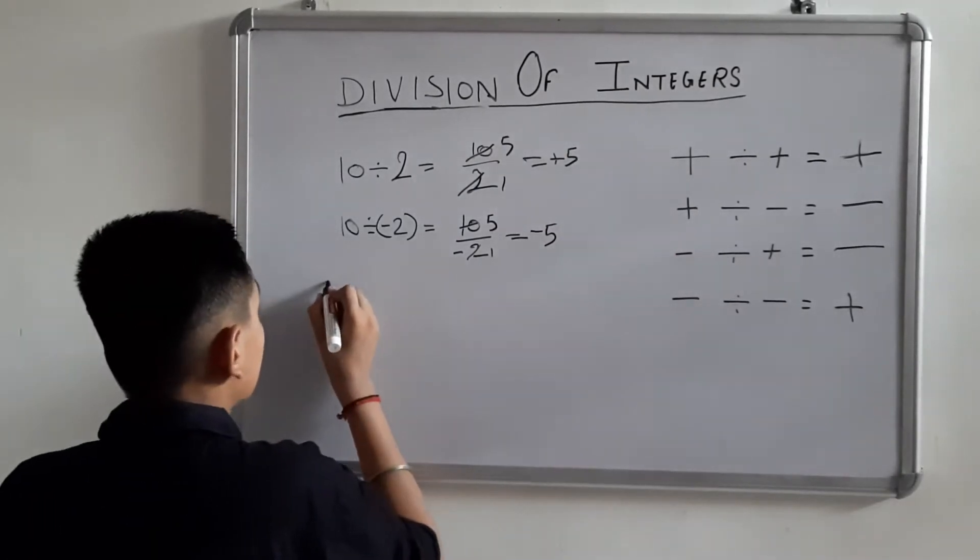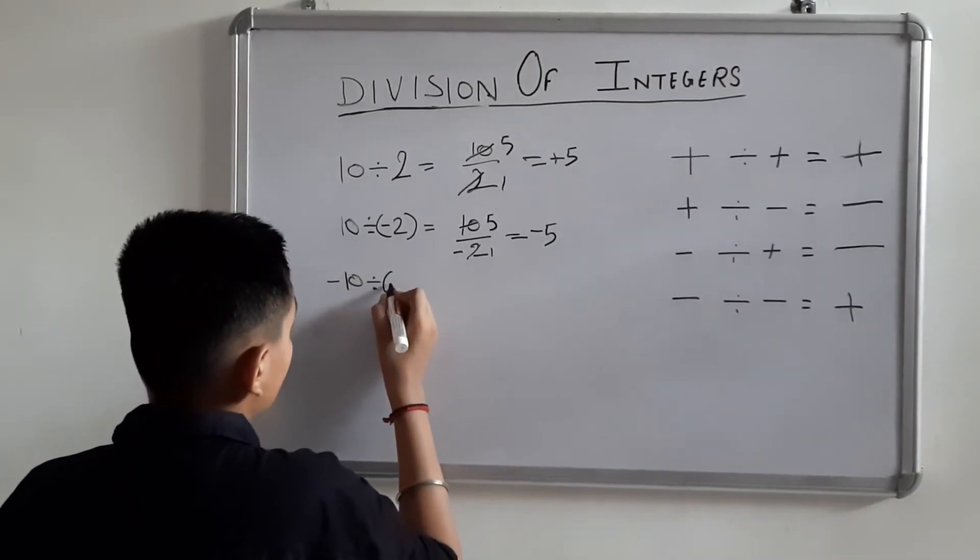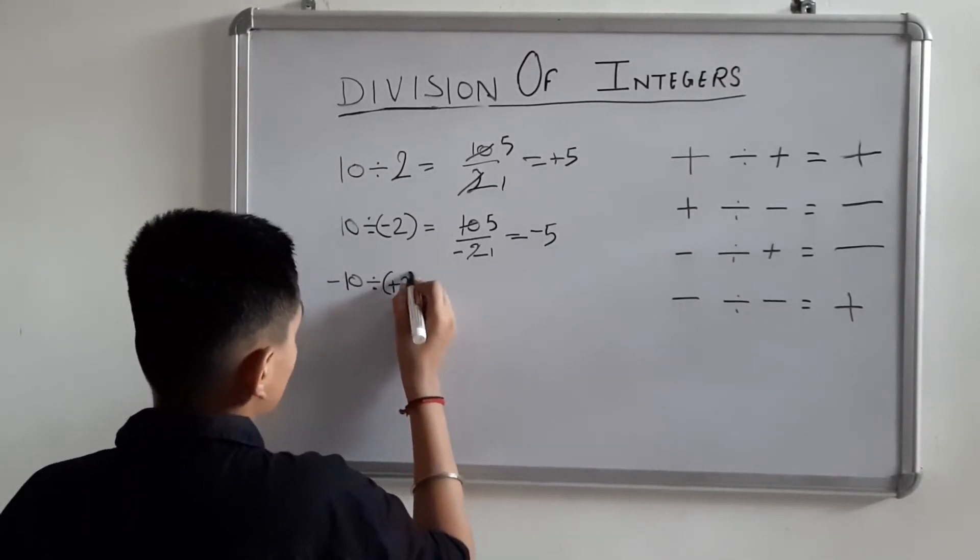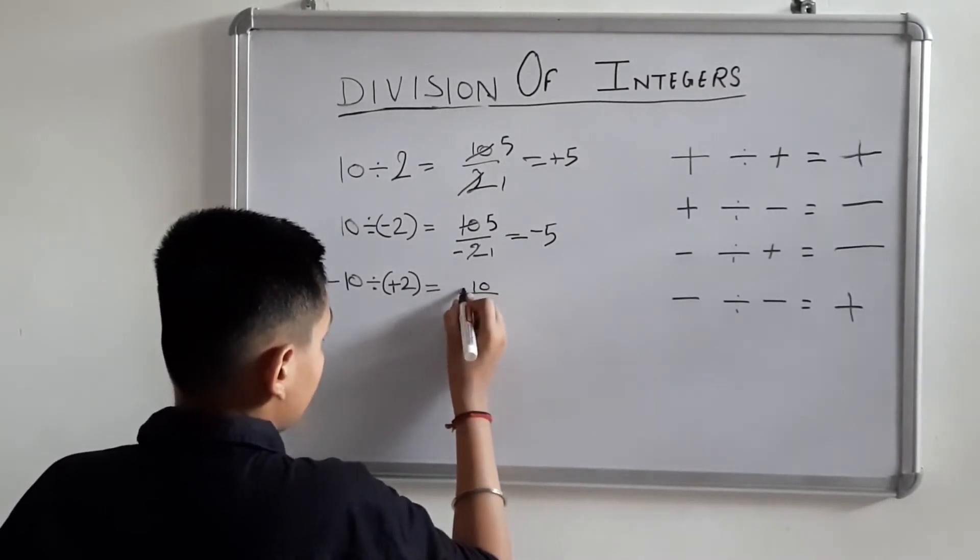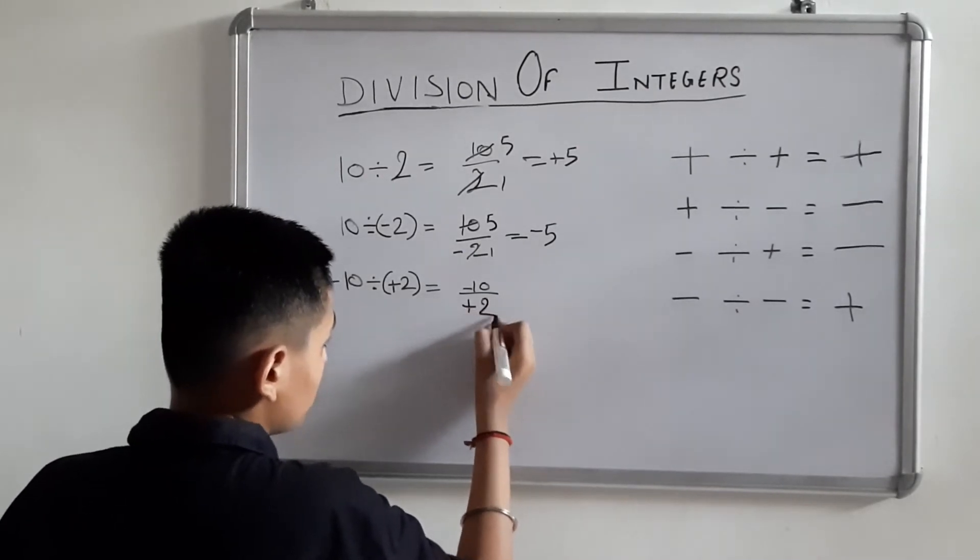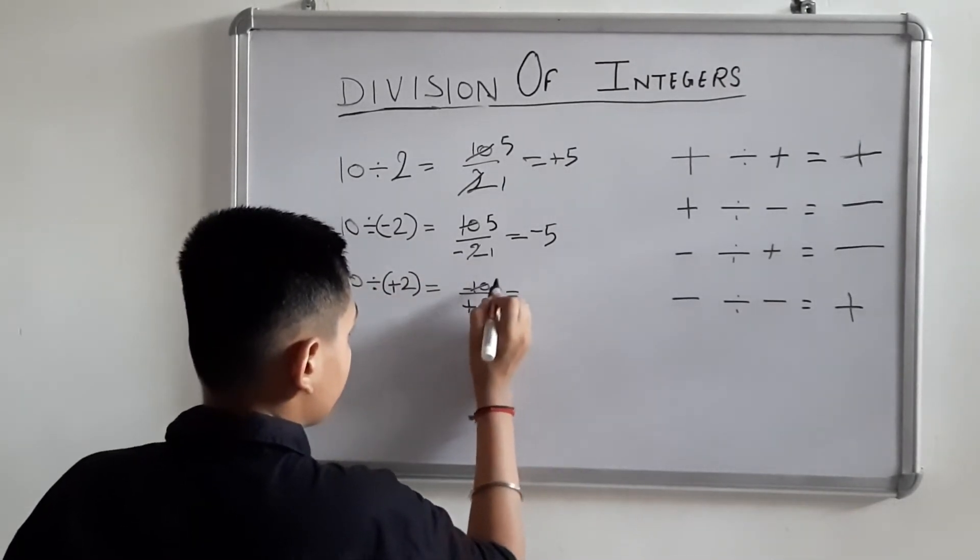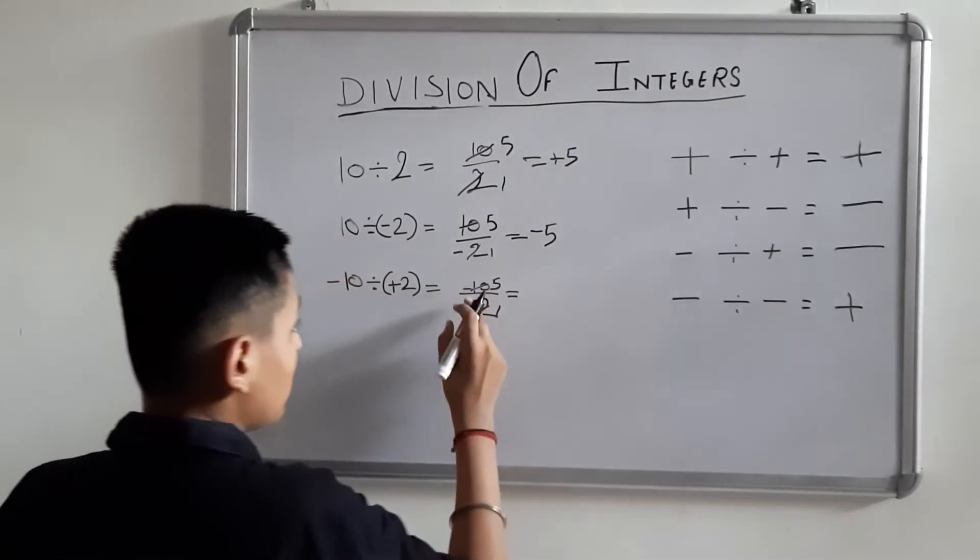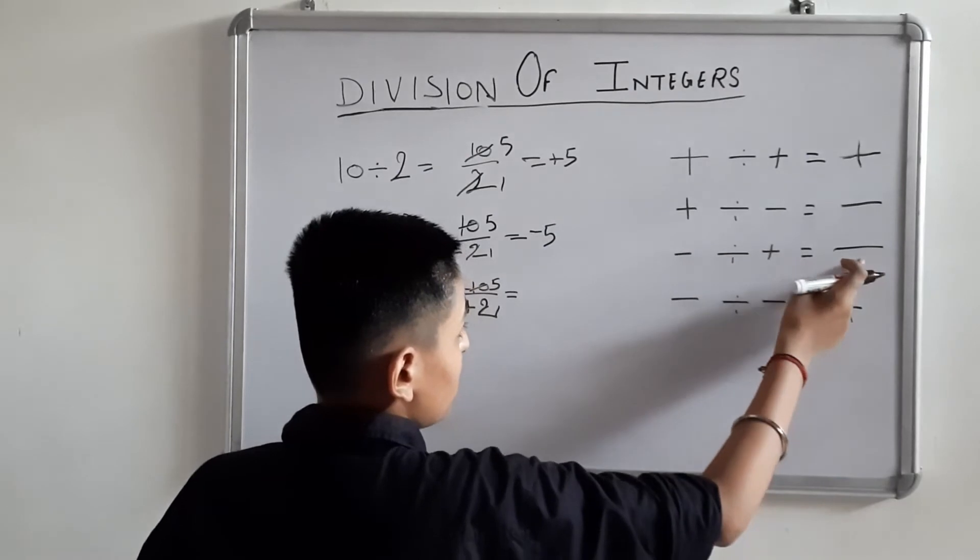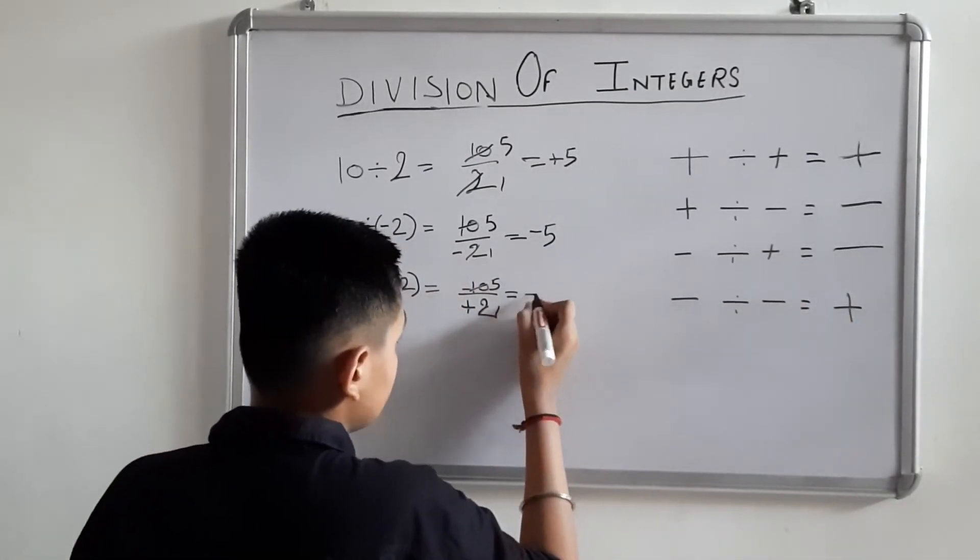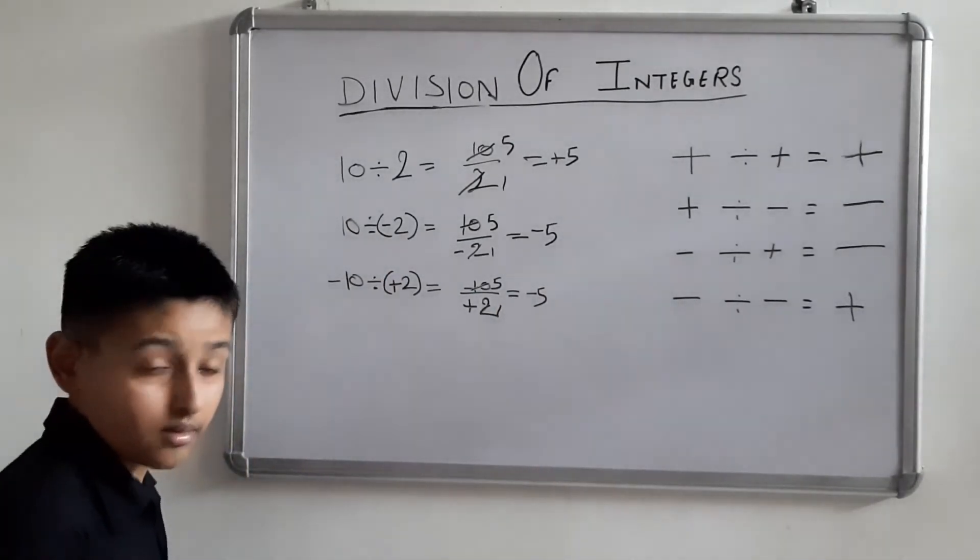Now take minus 10 divided by plus 2. First ignore the sign, only simple divide it. Now the sign: minus divided by plus equals minus. Minus sign, then 5. Minus 5.